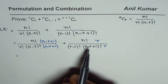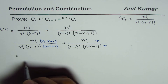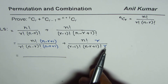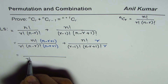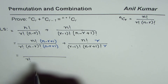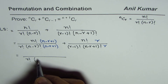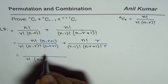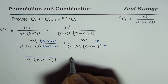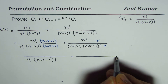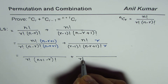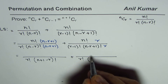By doing so we get a common denominator. The denominator can now be written as r factorial times n minus r plus 1 factorial, which can also be written as n plus 1 minus r factorial. Here also we have the same denominator.